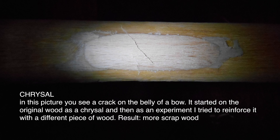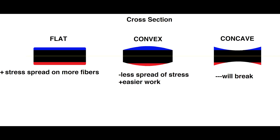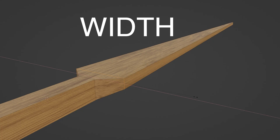Cross section. A strong, lightweight and efficient bow is designed to spread the stress on as many fibers as possible. To spread the load on the width of the bow, the cross section should be flat. A convex cross section is easy to work with using hand tools, but results in higher stress of the fibers on the peak of the curves.